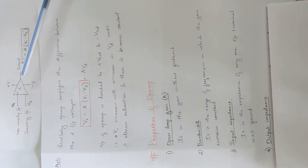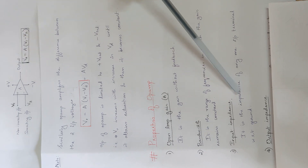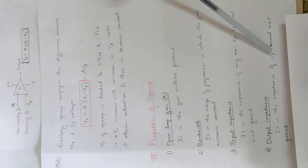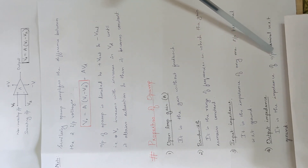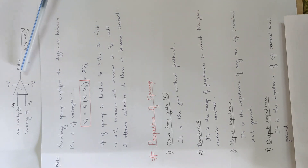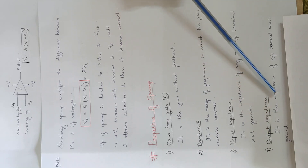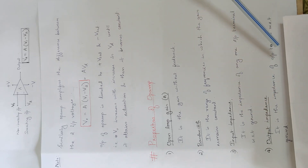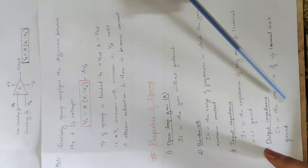Now we have the output terminal. Output impedance is the impedance of the output terminal with respect to ground. This is the 4th property.